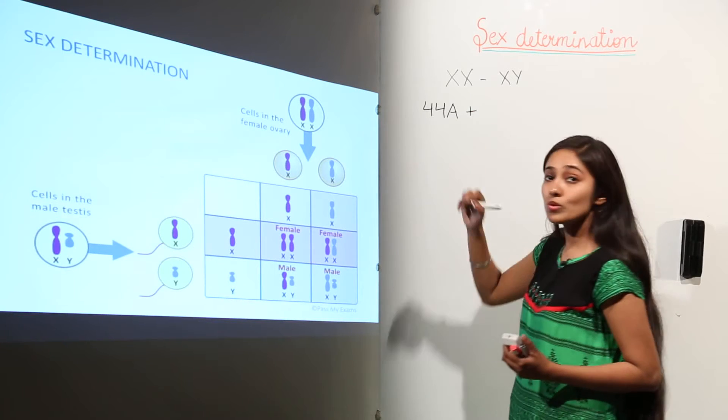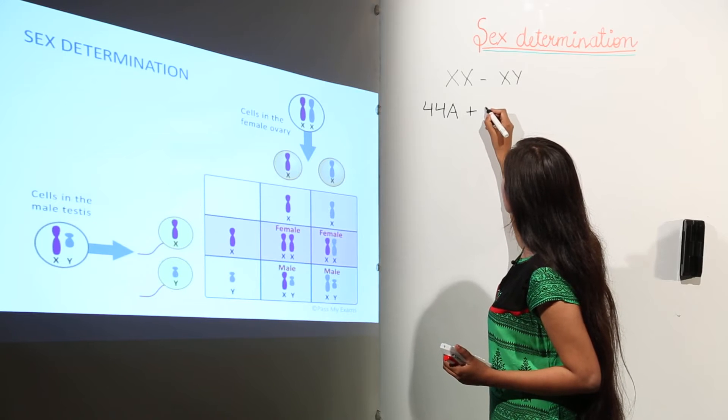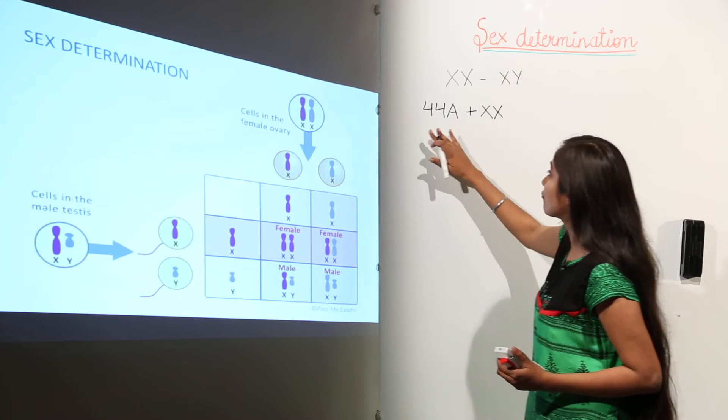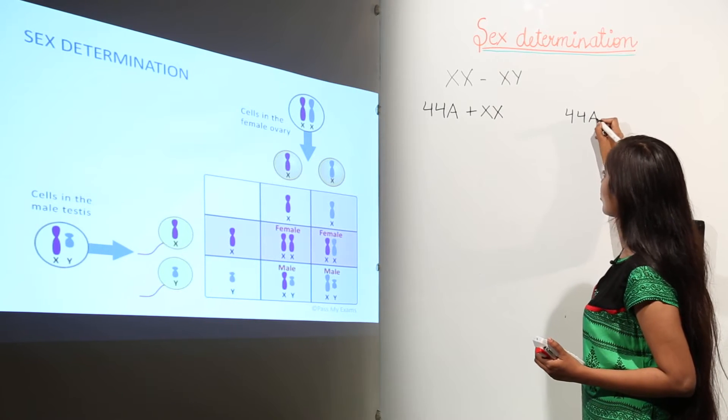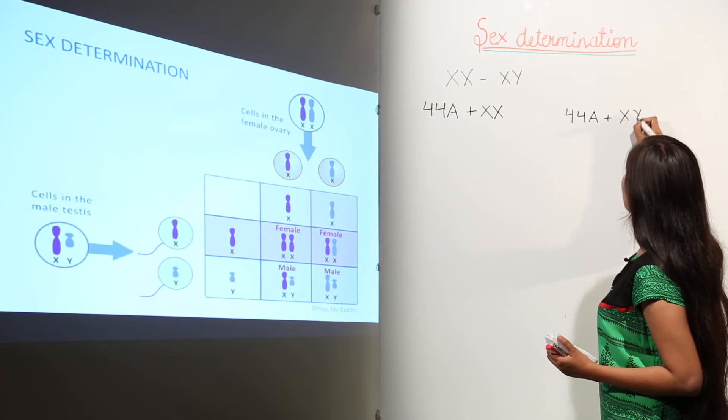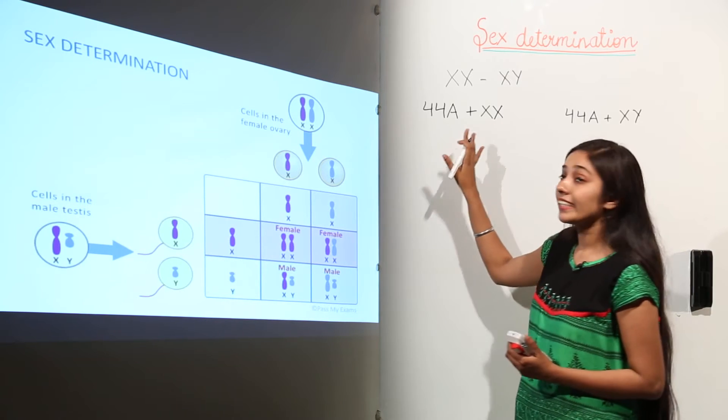Plus there are two sex chromosomes. We can say here XX in case of females, and the same way the male also has 44 autosomes plus XY sex chromosomes in case of males. When we talk about the gametes,